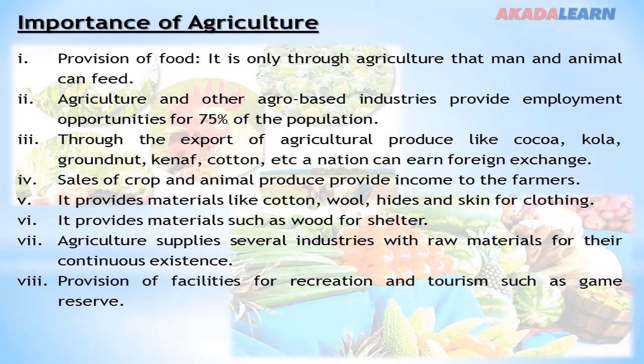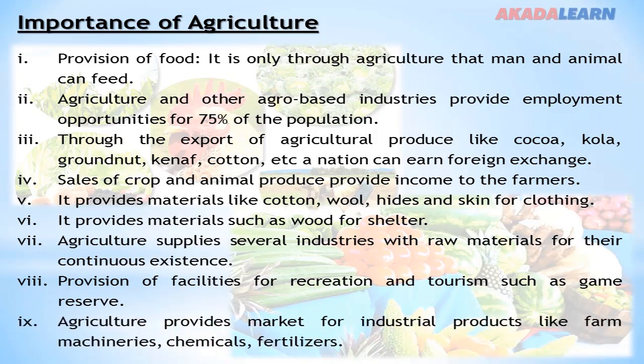Agriculture provides provisions to facilitate recreation and tourism, such as game reserves. Agriculture also provides a market for industrial products like farm machineries, chemicals, and fertilizers.